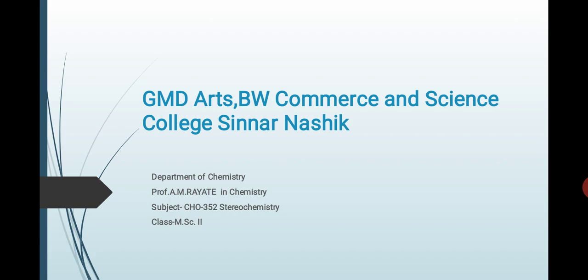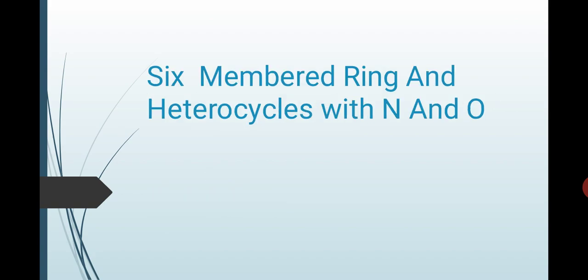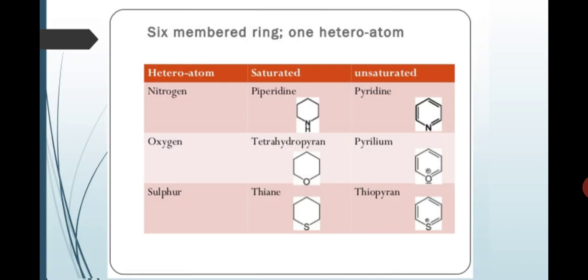Now I have first discussed the six membered ring and heterocycle with nitrogen and oxygen. This is a six membered ring with one heteroatom: heteroatom is nitrogen, oxygen, and sulfur.